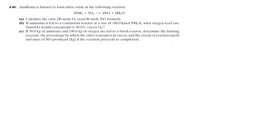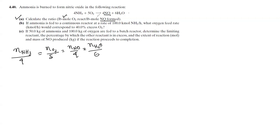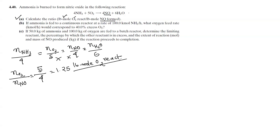In this problem solving session, we have a stoichiometric analysis. The question asks for the ratio of pound moles of oxygen reacting per pound mole of nitrous oxide formed. From the stoichiometric equation: NH3/4 = O2/5 = NO/4 = H2O/6. So the ratio of O2 to NH3 is 5 by 4, which means 1.25 pound mole oxygen reacts per pound mole.